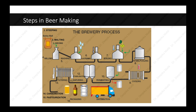Now coming to the backbone of the topic — the brewery process. As you can see in the diagram, there are a total of 16 steps responsible for beer making: first steeping, second malting, third sieving, fourth milling, fifth mashing, sixth lautering, seventh boiling, eighth whirlpooling, ninth cooling, tenth fermenting, eleventh maturing, twelfth stabilization, thirteenth filtering, fourteenth carbonation, fifteenth pasteurization, and sixteenth packaging and distribution.